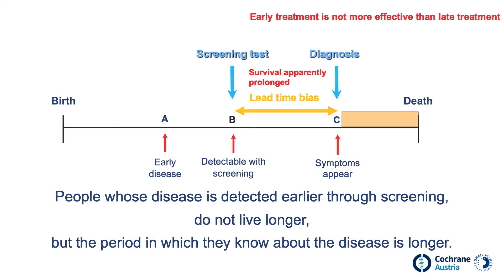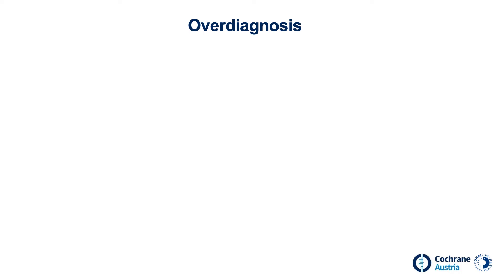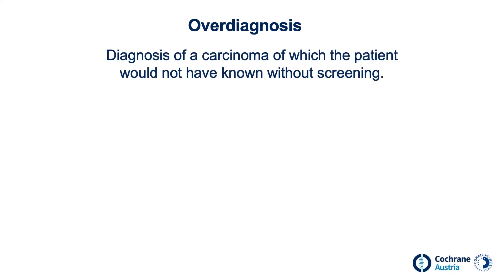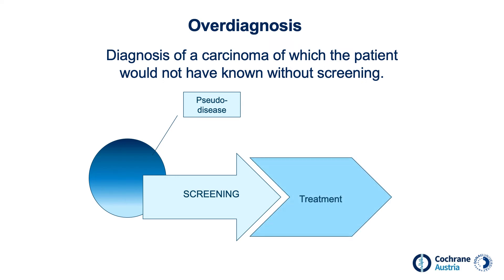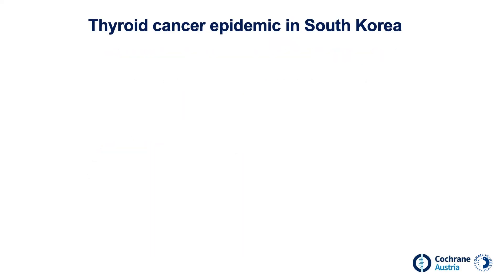Another harm caused by screening is overdiagnosis. In the case of cancer screening, overdiagnosis is a diagnosis of a carcinoma of which the patient would not have known without screening. A significant proportion of the population has a type of cancer that would never have been detected or caused symptoms during their lifetime — this is known as pseudodisease. If screening is done to detect cancer early, harmless cancers that would never have caused symptoms are discovered. These are often difficult to distinguish from cancers that progress and need to be treated. Therefore, patients with pseudodiseases are also treated and suffer side effects that would not have been necessary.